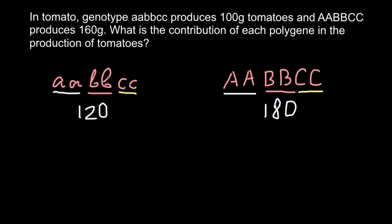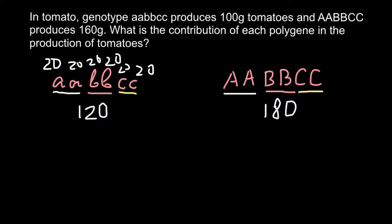It's now very easy to understand this problem: each allele contributes something to the fruit weight. We have six alleles here, and if we divide 120 grams by six we get 20 grams per allele. And if we divide 180 by six, we find that each dominant allele contributes 30 grams to the weight of the fruit.